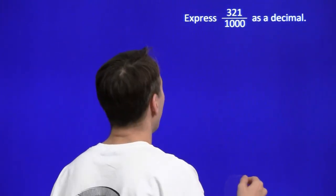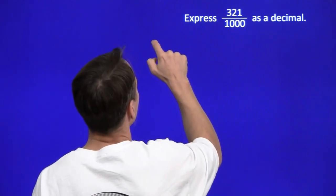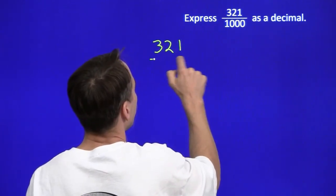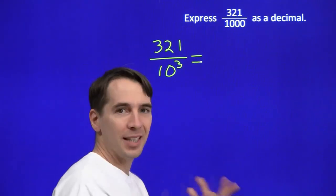We're going to start here with 321 divided by 1,000. Thousands of power of 10, we know how to divide by powers of 10. We've got 321. 1,000 is just 10 cubed, so we're dividing by 10 three times.